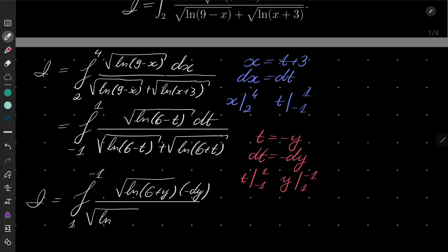So we have natural log of 6 plus y minus dy instead of dt. Here we have natural log of 6 plus y and natural log of 6 minus y.